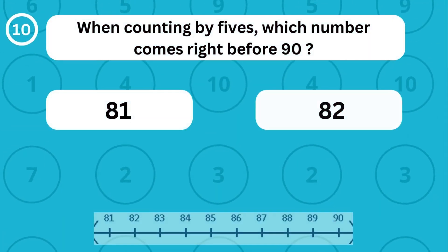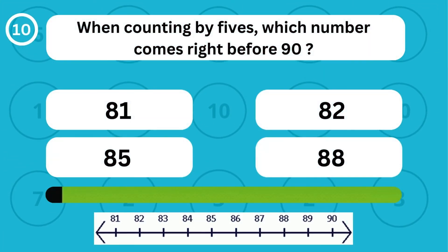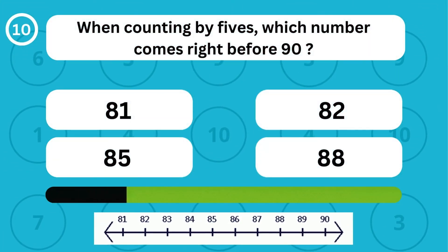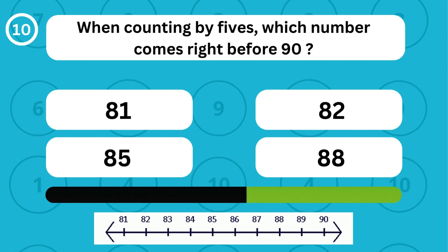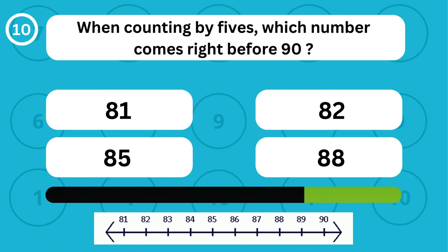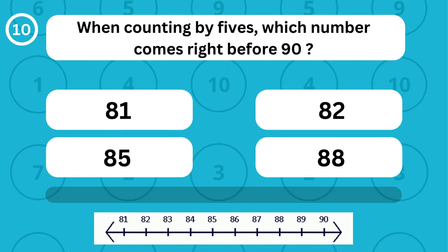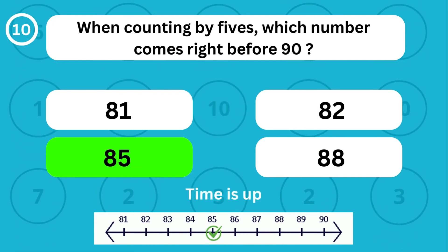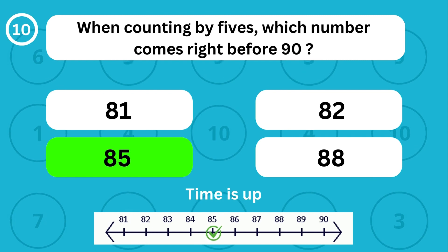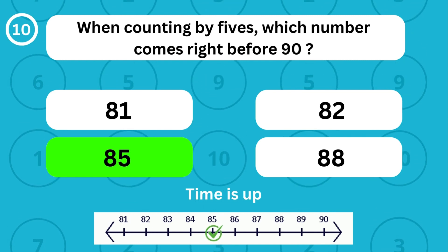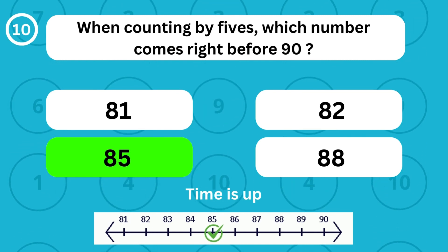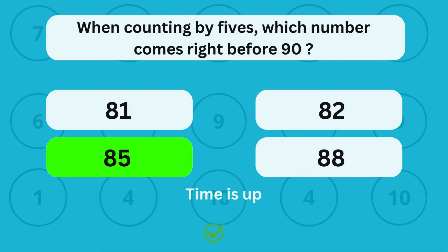When counting by fives, which number comes right before 90? When counting by fives, the number 85 comes right before 90.